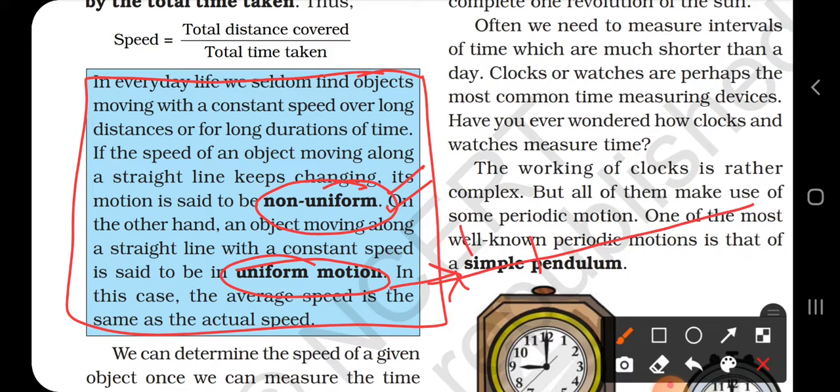For example, a body is traveling on a highway. First ten kilometers it covered in five minutes, then ten in five minutes, then ten in five minutes. This means equal distance in equal interval of time. This is called uniform motion.